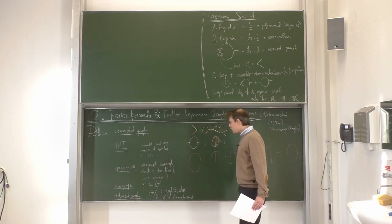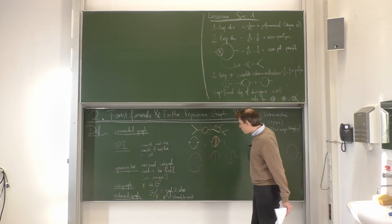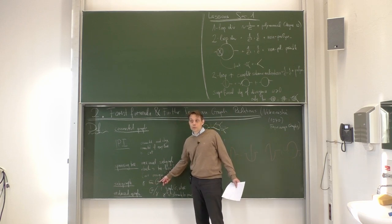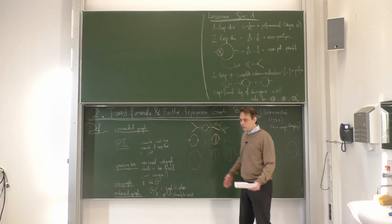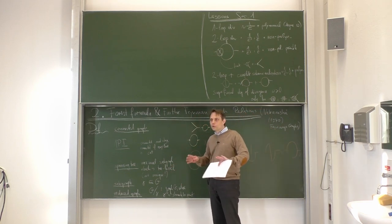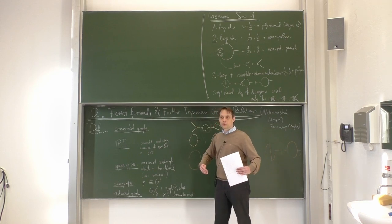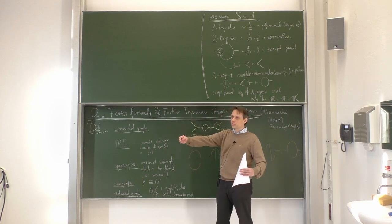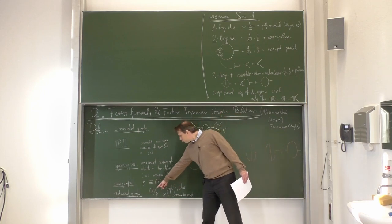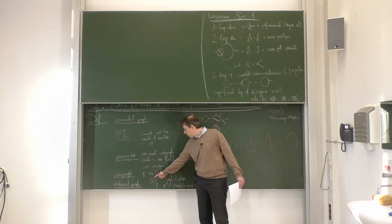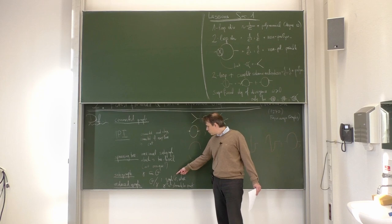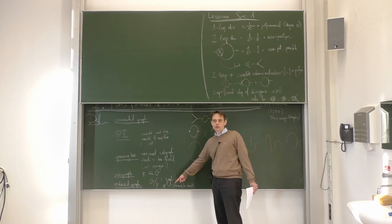Then there is a subgraph — a subgraph may be the full graph, the empty set, or anything in between. If you define a graph by vertices and lines, then the subgraph will always contain lines and all the attached vertices. Then there is the reduced graph, written as G divided by a subgraph γ, defined as the graph G obtained by contracting the subgraph γ to a point.